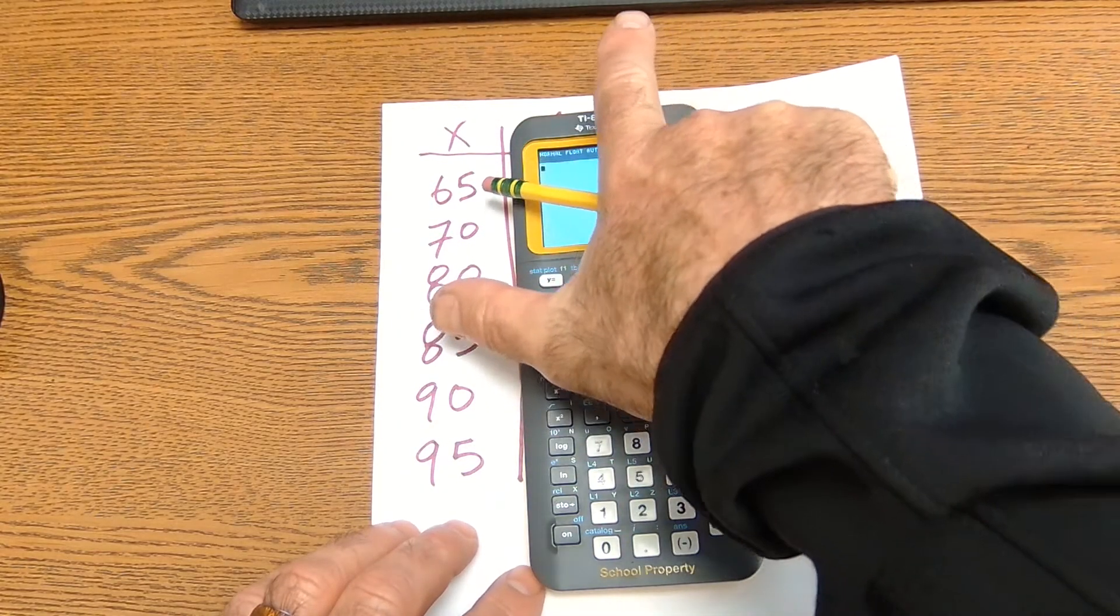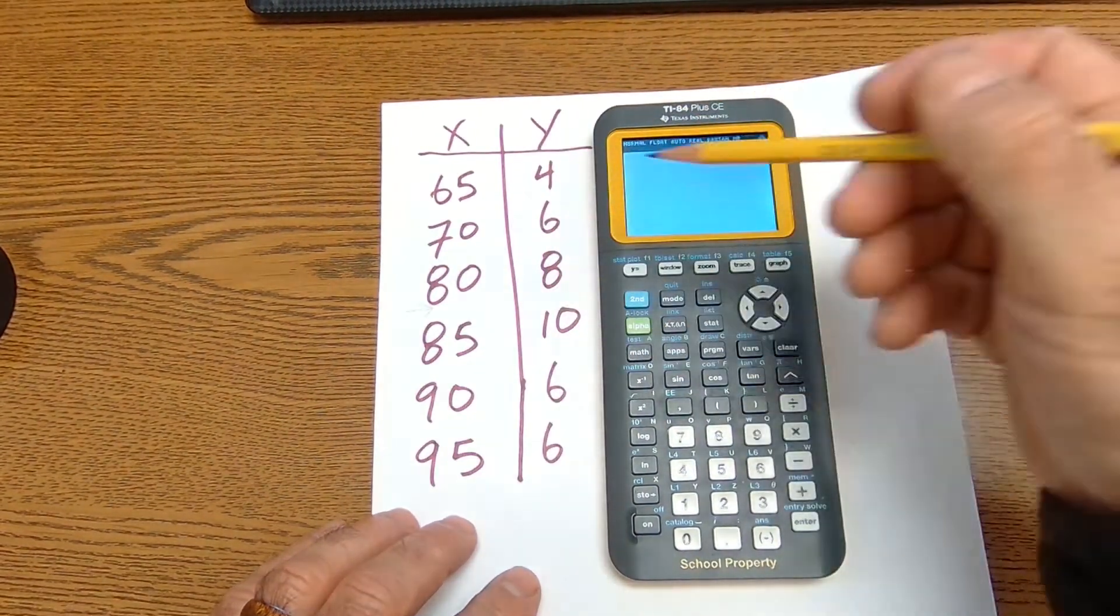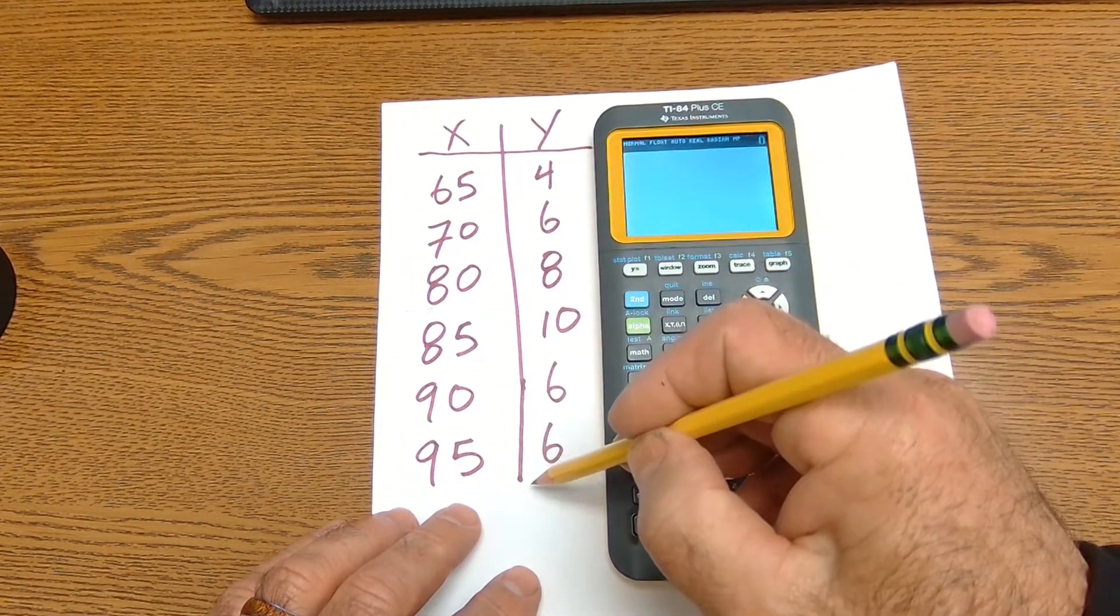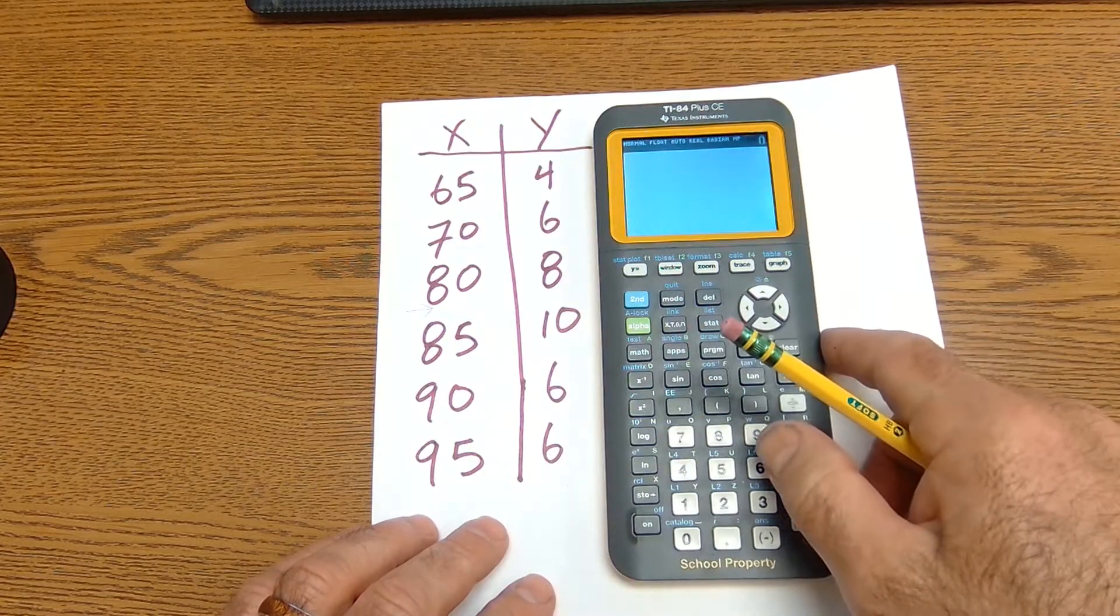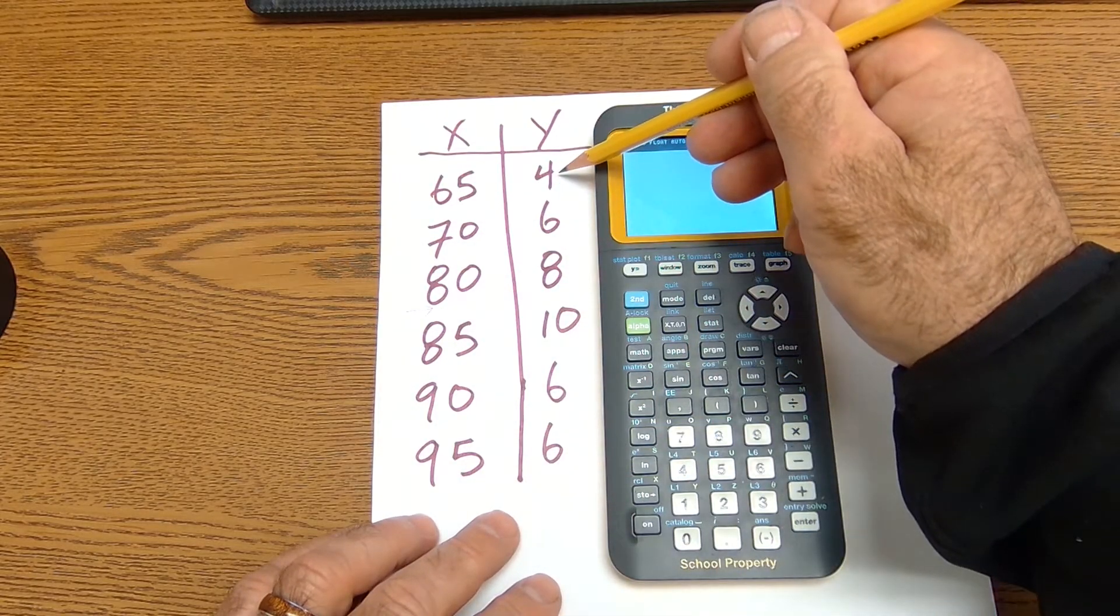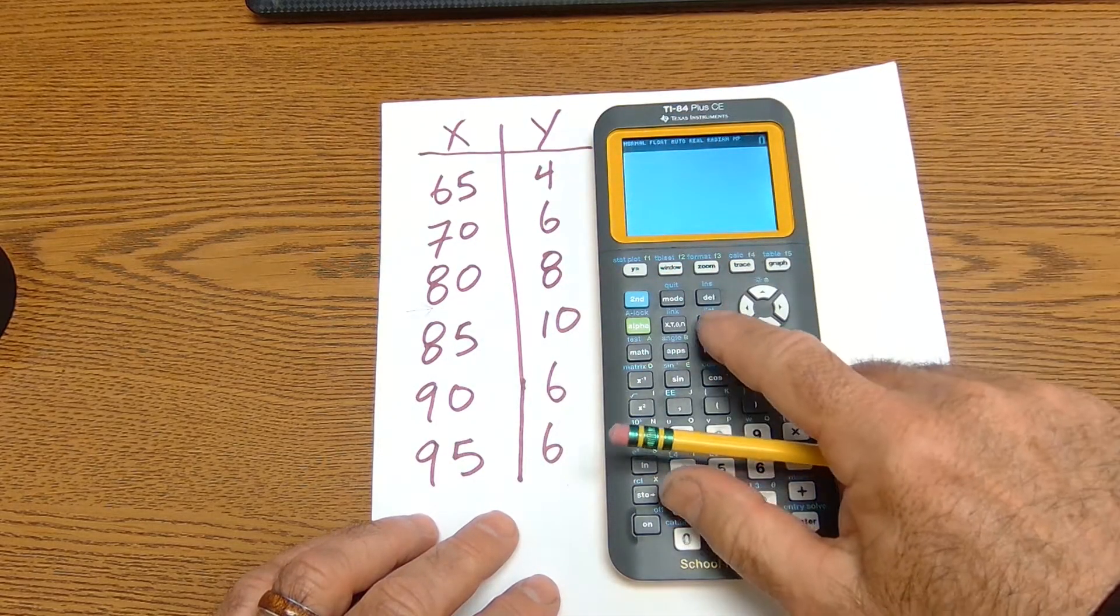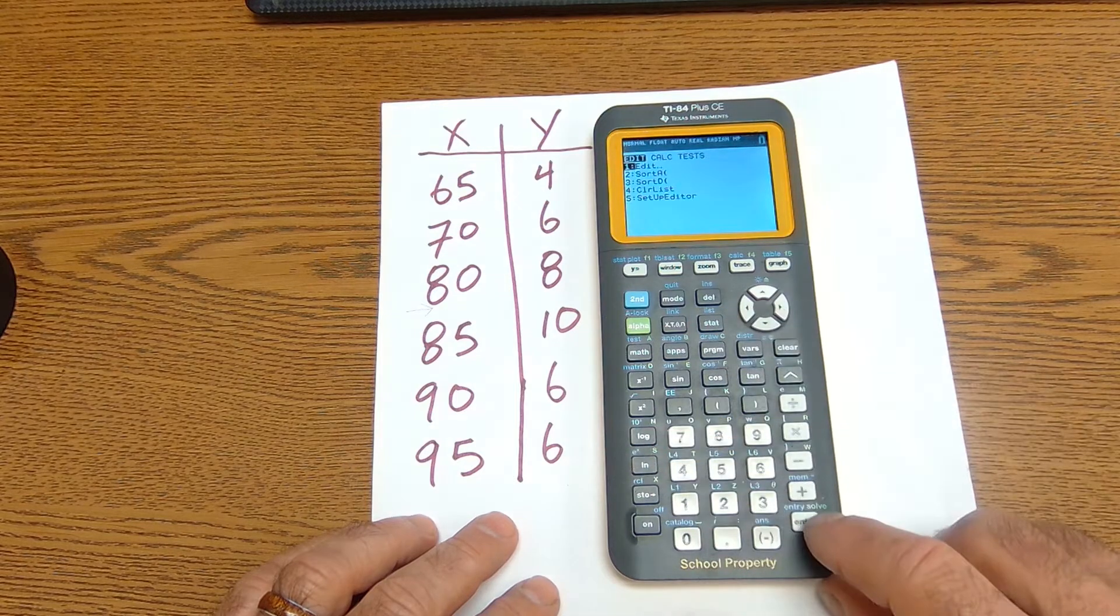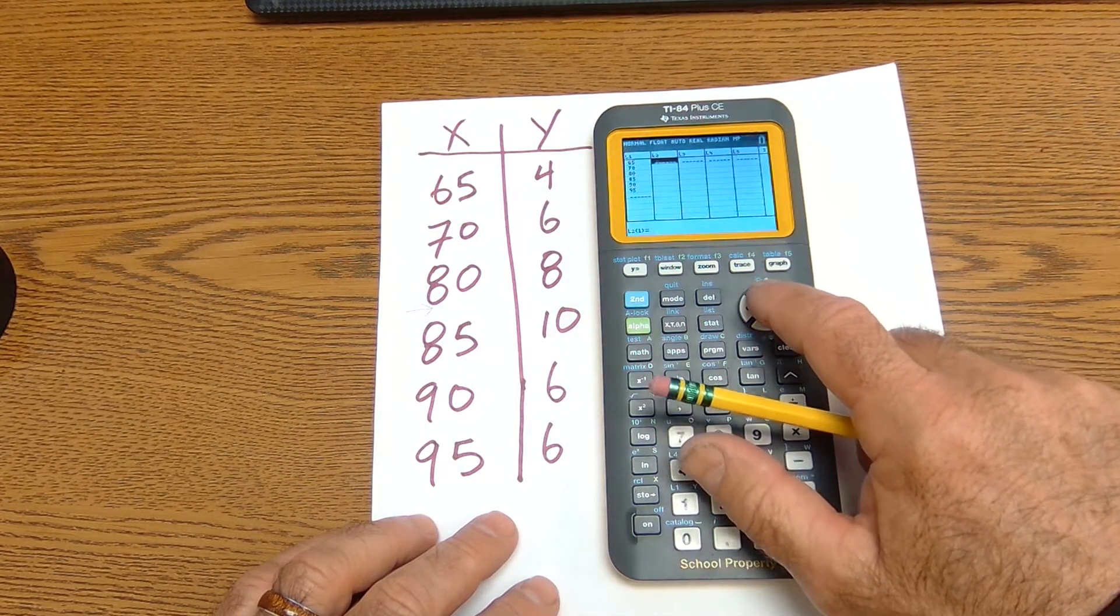Okay, let's clear that. Let's go into our second scenario, a frequency distribution. Now I don't have six scores. I have 40 scores. So what I need to do is enter my frequency, how often they occur in my list.